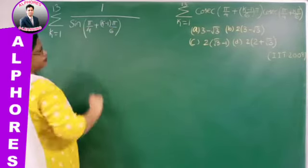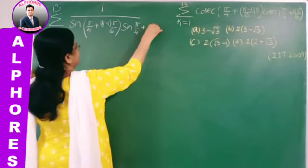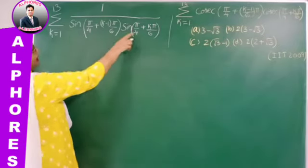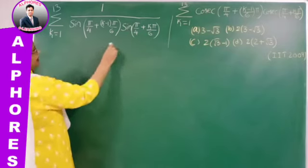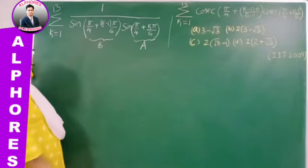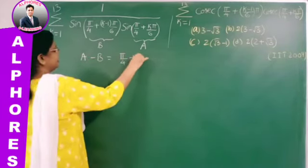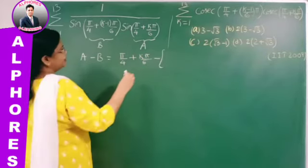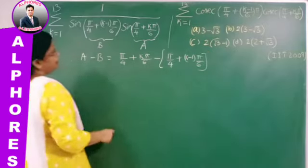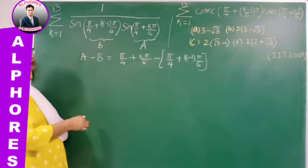Now observe the two angles clearly — call one A and the other B. The difference A − B equals (π/4 + Kπ/6) − (π/4 + (K−1)π/6). The π/4 terms cancel, and the K·π/6 terms cancel, leaving only π/6. So the difference of the two angles is π/6, independent of K. For every value of K, the angle difference is π/6.